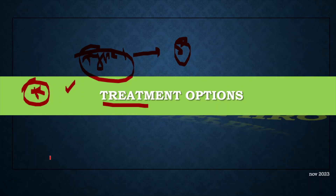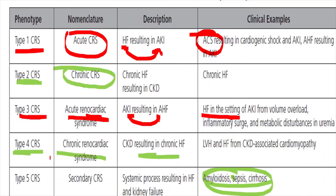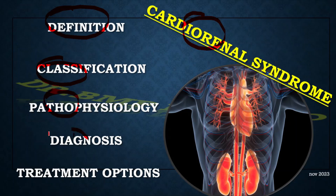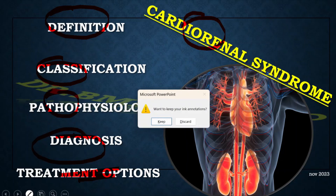After this short summary video, residents can go through UpToDate or the latest articles for more detail. At minimum, residents who were unaware of why a cardiac dysfunction patient develops AKI will now know there is a syndrome called cardiorenal syndrome. To summarize, we covered: definition, classification with five types, pathophysiology of acute CRS, diagnosis including biomarkers and bio-impedance monitoring, and treatment options. That's all.